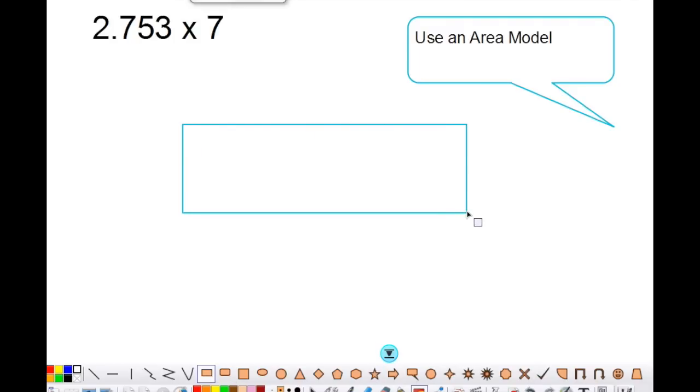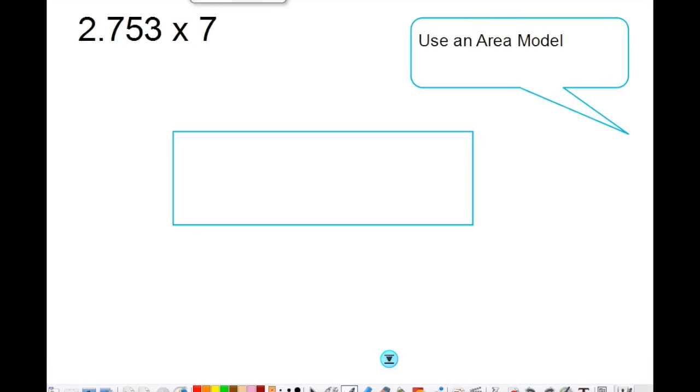I'm going to create my rectangle and partition it into my parts, and multiply them by seven. Starting with the ones place, there's two ones. In the tenths place I have seven tenths. The hundredths place I have five hundredths.